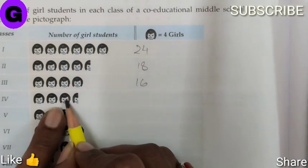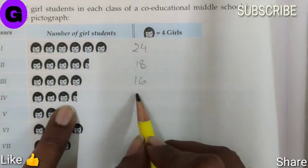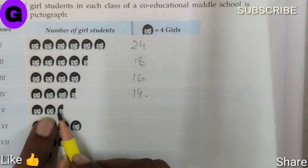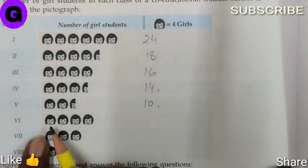Class 4 has 3 and a half faces, 3 times 4 is 12 plus 2 equals 14. Class 5 has 2 and a half faces, 4 times 2 is 8 plus 2 equals 10.